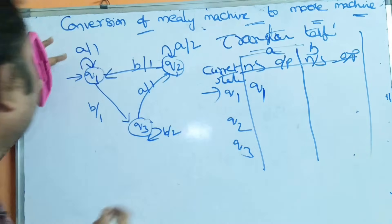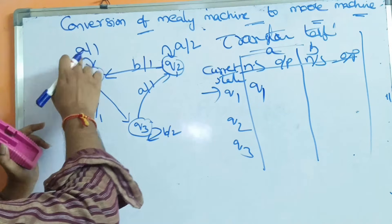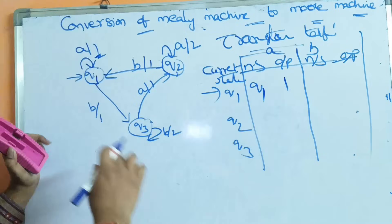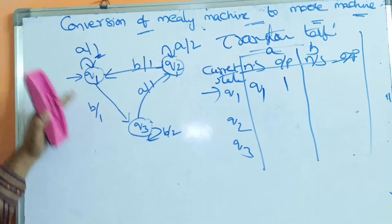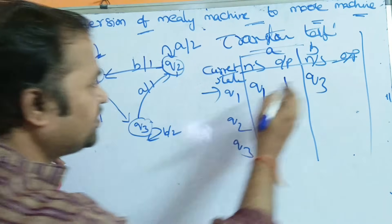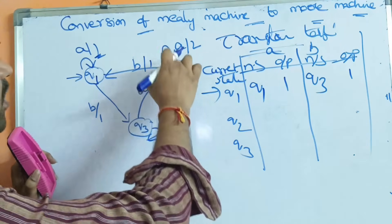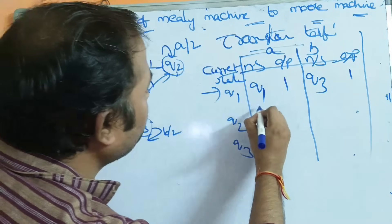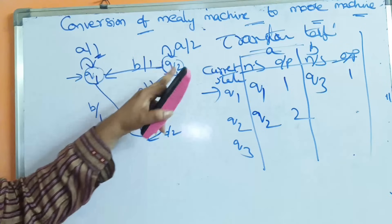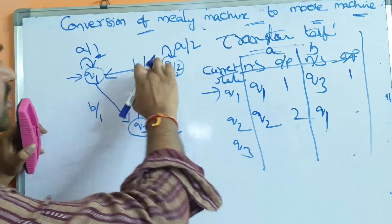Q1 on a goes to Q1, and the output is 1. Q1 on b goes to Q3, and the output is 1. Q2 on a goes to Q2, and the output is 2. Q2 on b goes to Q1, and the output is 1.